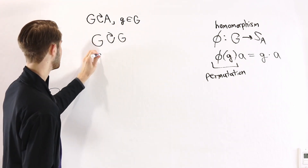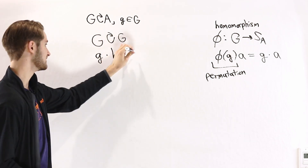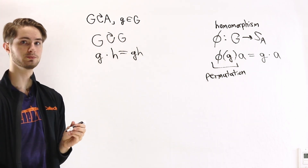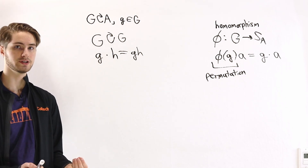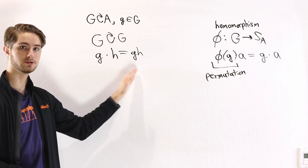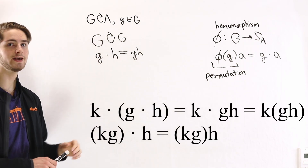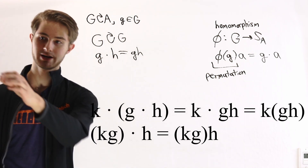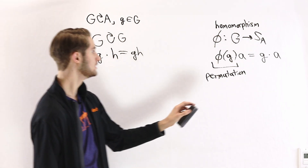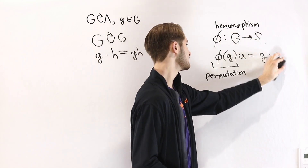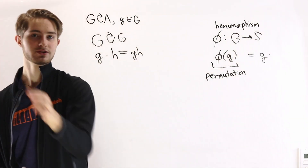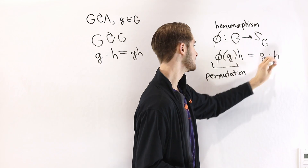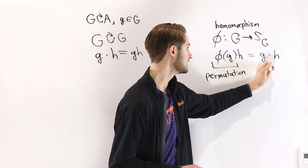This means that if we take some element g of the group and have it act on some element h — where the set is just G itself — we say g·h equals gh in the group. Because group multiplication is itself associative, this map is also associative; for example with K·(G·H) we can do the product in whatever order we want, so this is a well-defined group action. This also gives us a homomorphism, but now instead of going to the symmetric group on some arbitrary set A, it goes to the symmetric group on G, with φ(g)(h) = gh in the group.